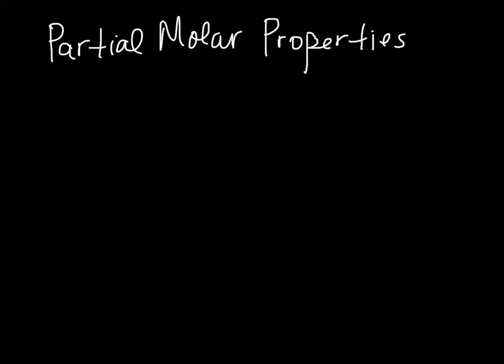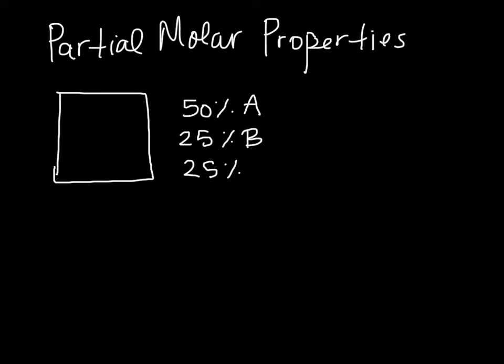So, let's assume that we have some system here. And we have 50% of the atoms here are A, and 25% of the atoms are B, and 25% of the atoms are C. And this has a total volume, V prime, and this prime indicates that this is not a molar volume, but it's for the entire system.